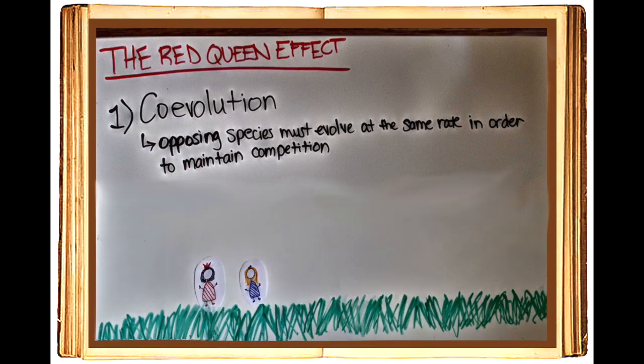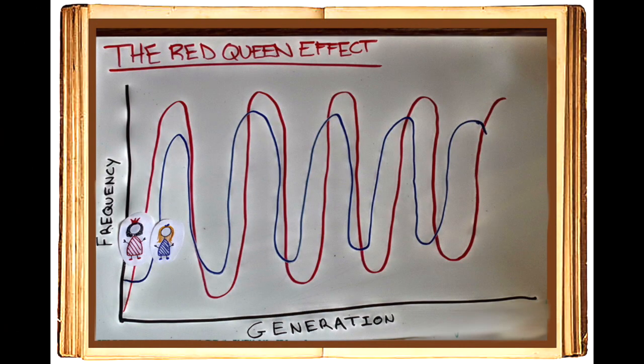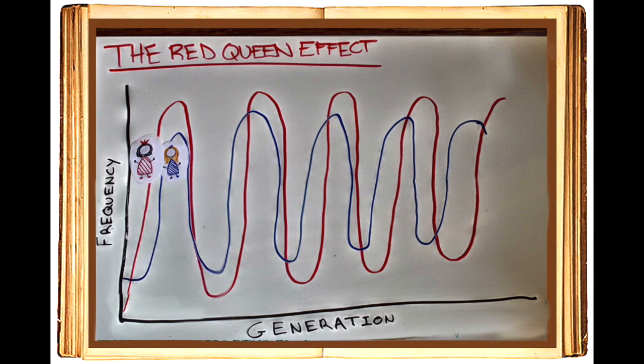Thus, the rate of extinction is constant over millions of years. The graph for the Red Queen effect reflects the process of co-evolution between species through continuous oscillations. In this example, the red line represents the Red Queen, and that blue line represents Alice. Oscillations on the graph show how species must continuously evolve and always catch up to each other when facing competition.